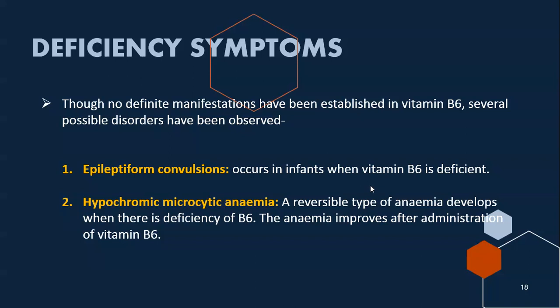Though no definitive manifestations are established for Vitamin B6 deficiency, several possible disorders are observed. These include epileptiform convulsions, which occur in infants when Vitamin B6 is deficient. Hypochromic microcytic anemia, a reversible type of anemia, develops with Vitamin B6 deficiency and improves after administration of the vitamin, since B6 is necessary for heme synthesis.